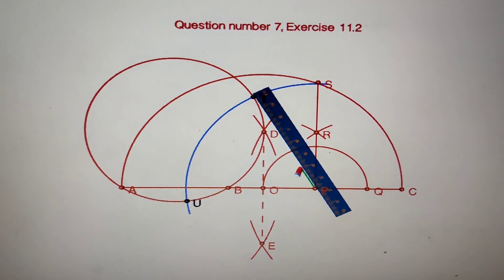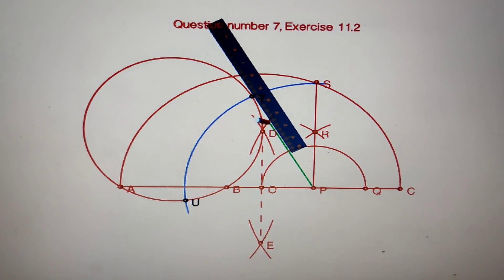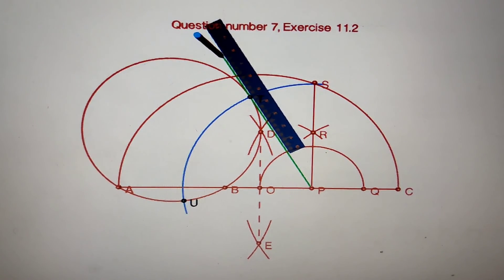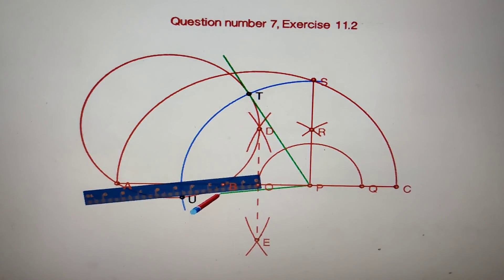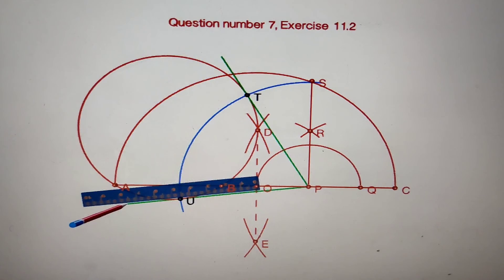Now join PT and PU. These are the tangents to the circle. PT and PU are the tangents from the point P.